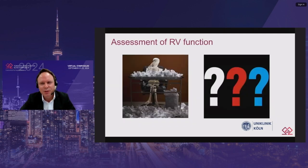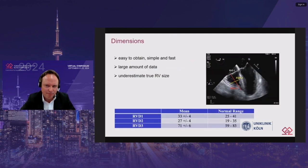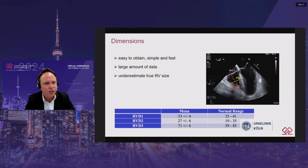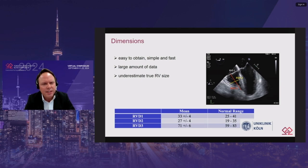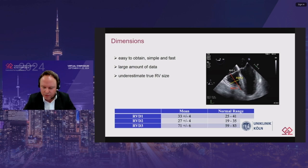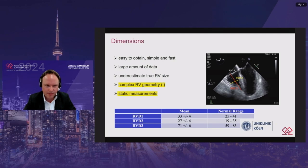So what to do? We have to look into the literature ourselves. Starting with right ventricular dimensions, which are easy to obtain, simple, fast, and backed by a large amount of data — but they may underestimate the true right ventricle size because of its complex geometry, and they are just static measurements.